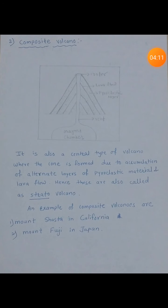So apanata cha dusra type baguya. It is a composite volcano. Composite volcano cha diagram di lela hai. Tachyamadhe crater daakholo la hai, lava flow daakholo la hai, pyroclastic layer daakholo la hai. Vent magma chamber paasun zode lela hai. Typical volcano structure saapl lela — tachyamadhe structure dishto.